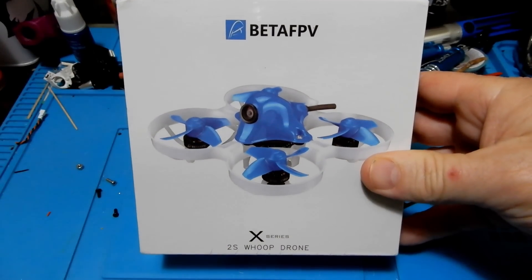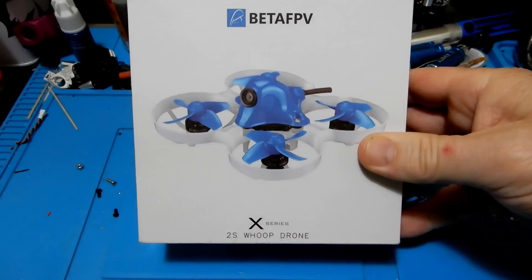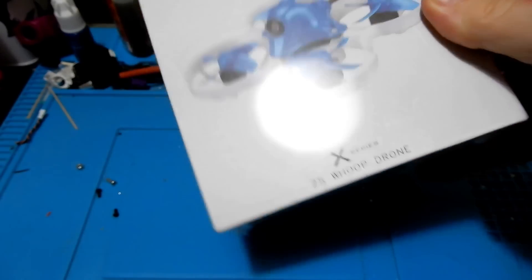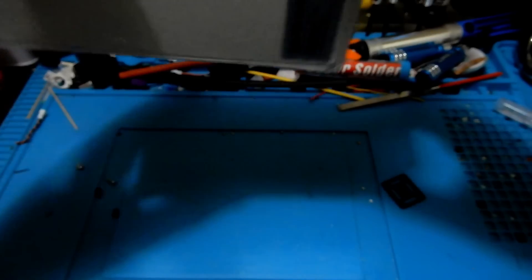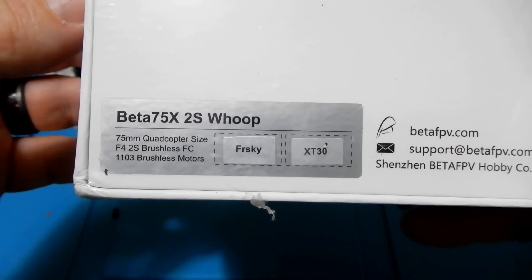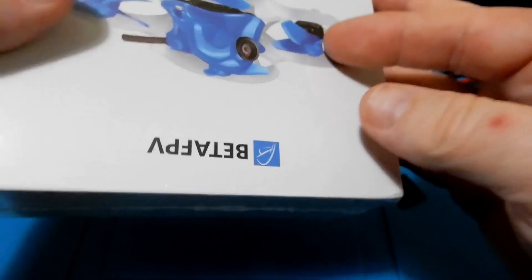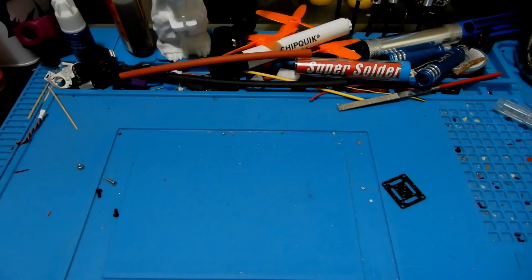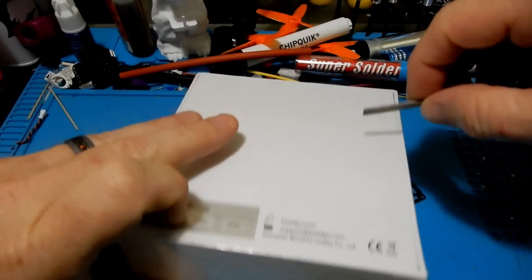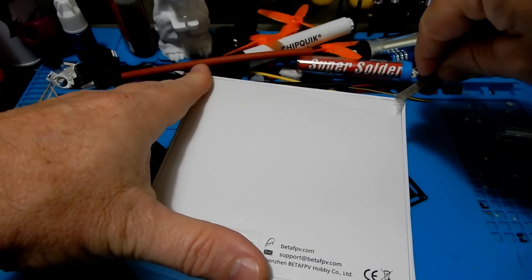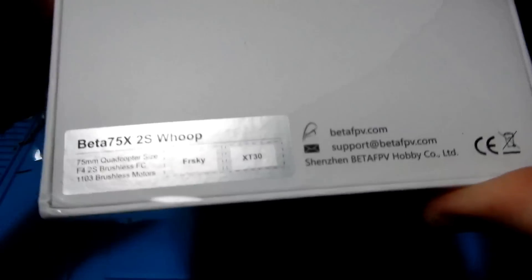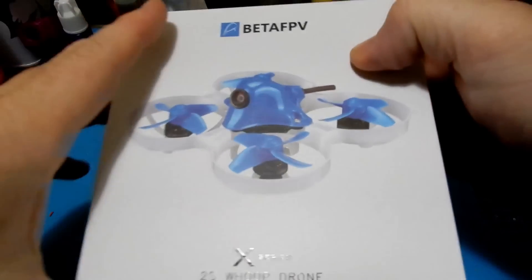Now with all that said let's go ahead and get into today's review, the Beta 75X by Beta FPV. This is a 2S brushless whoop style drone and it is wonderful, I can't tell you how wonderful it is enough. I got the FrSky version with the XT30 plug. That's what I recommend, it also comes in JST 2.0 plugs. A big thanks to the Beta FPV storefront and the Banggood storefront on Amazon who provided this for us today to review. Let's open this thing up.